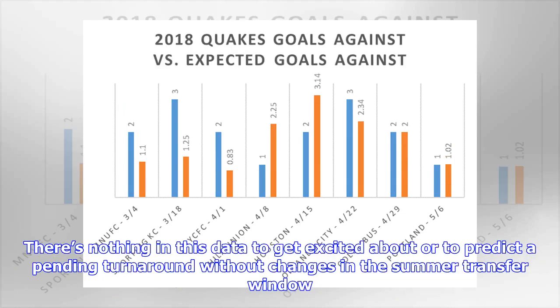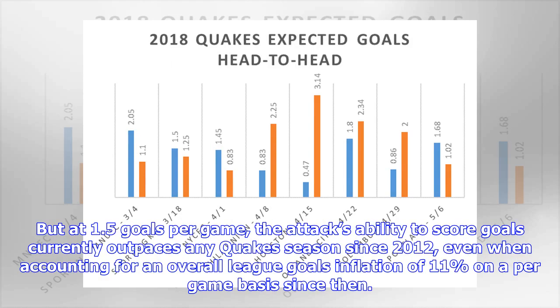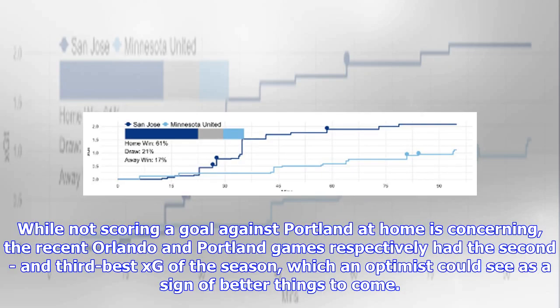There's nothing in this data to get excited about or to predict a pending turnaround without changes in the summer transfer window. But at 1.5 goals per game, the attack's ability to score goals currently outpaces any Quake season since 2012, even when accounting for an overall league goals inflation of 11% on a per-game basis since then. While not scoring a goal against Portland at home is concerning, the recent Orlando and Portland games respectively had the second and third best xG of the season, which an optimist could see as a sign of better things to come.